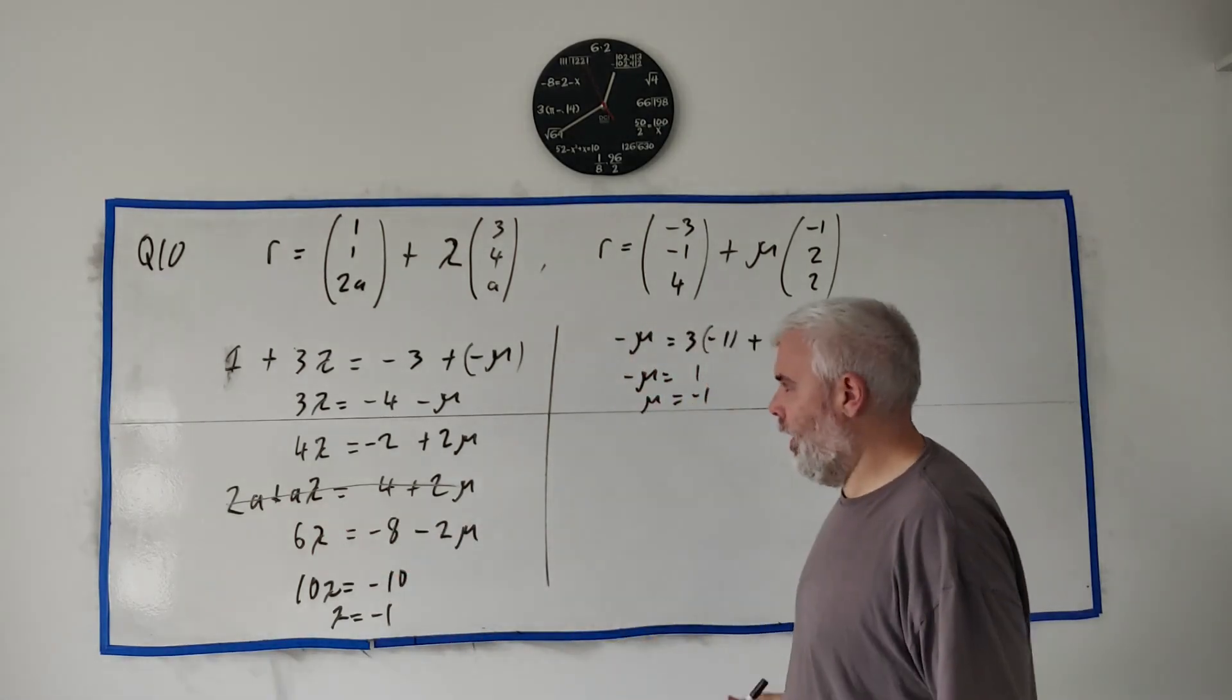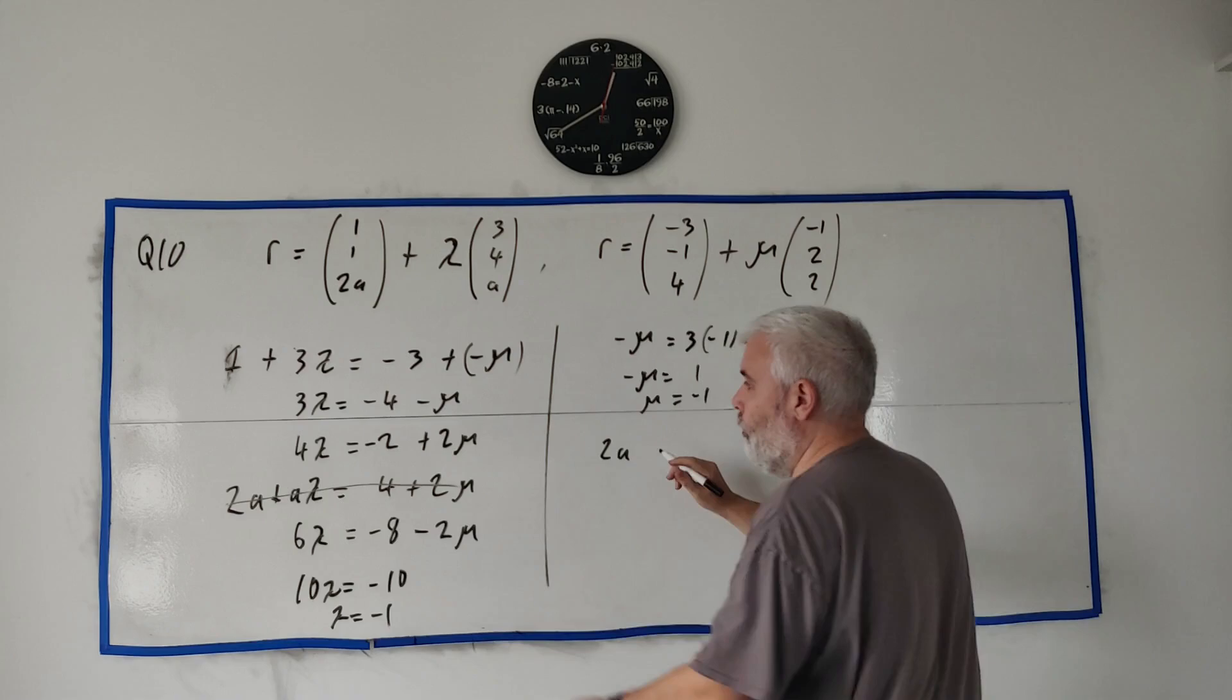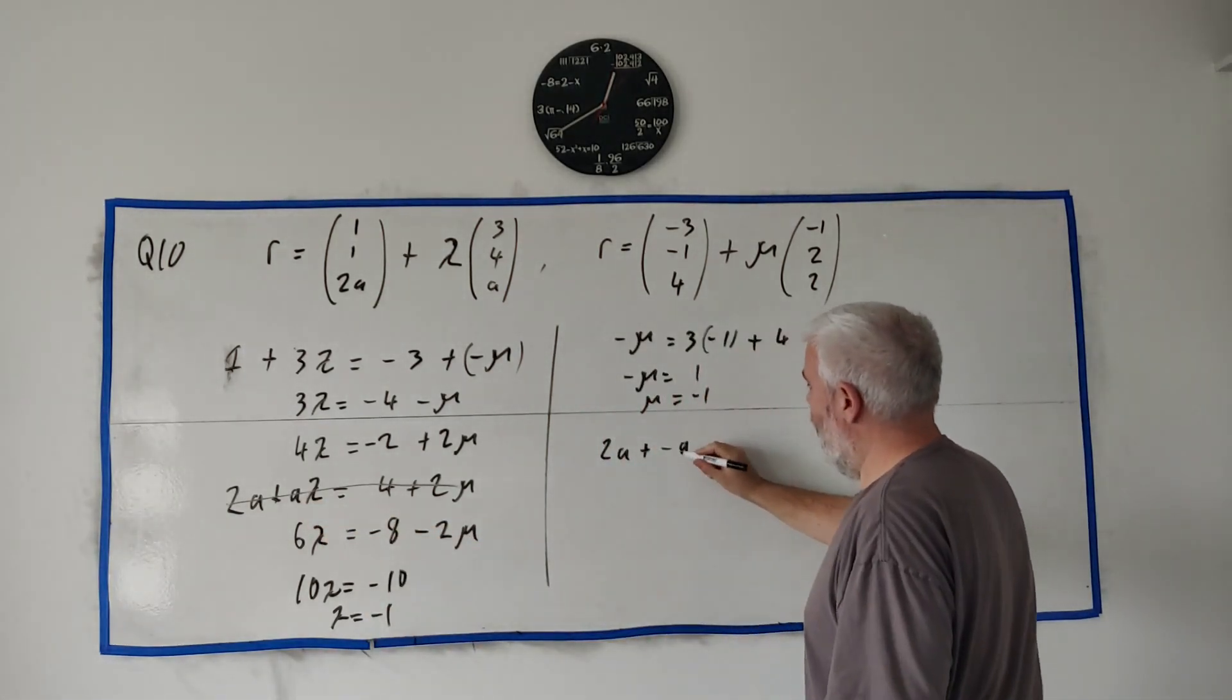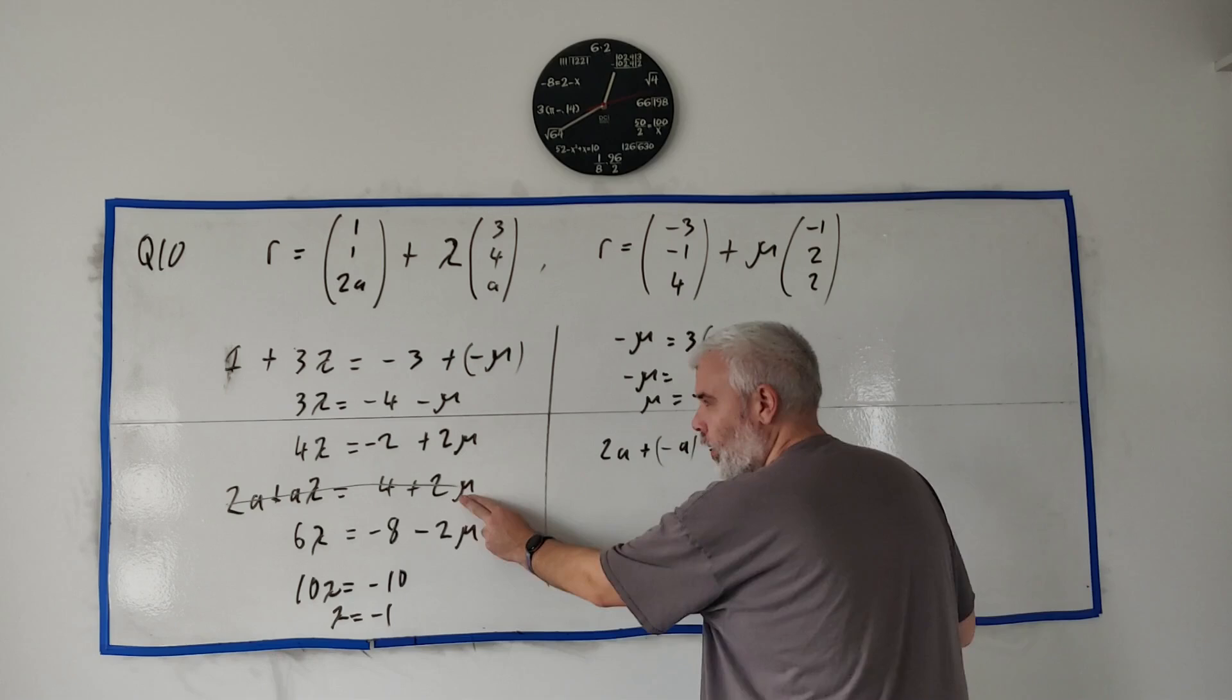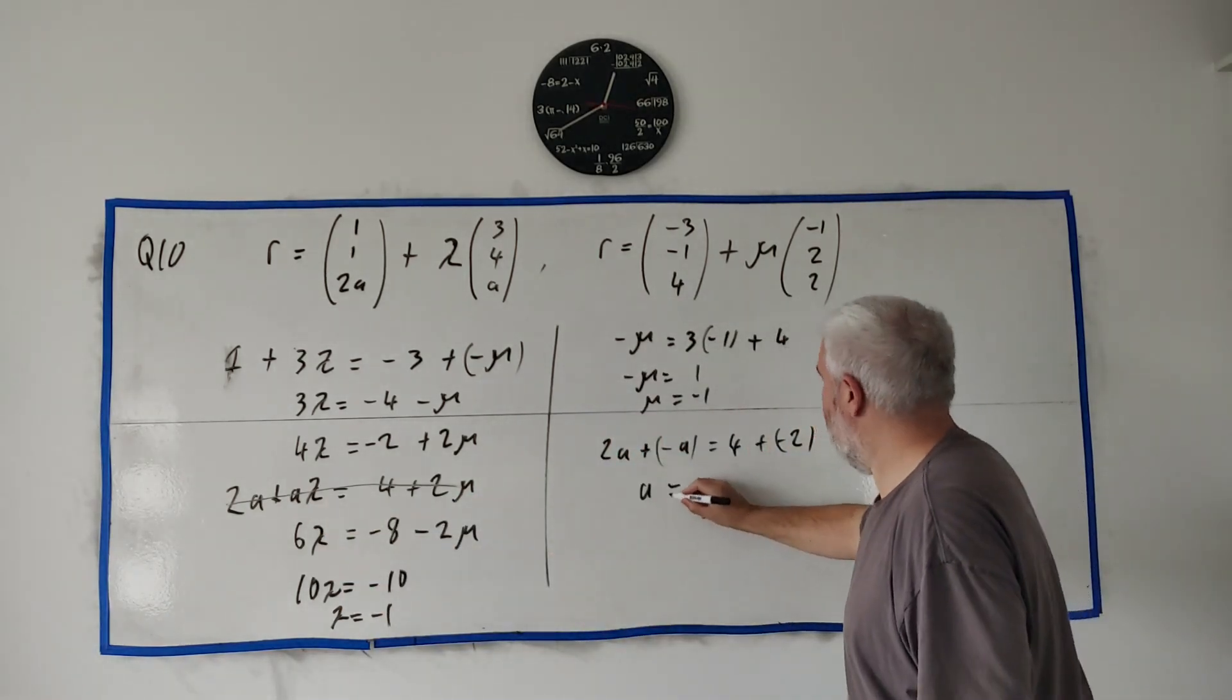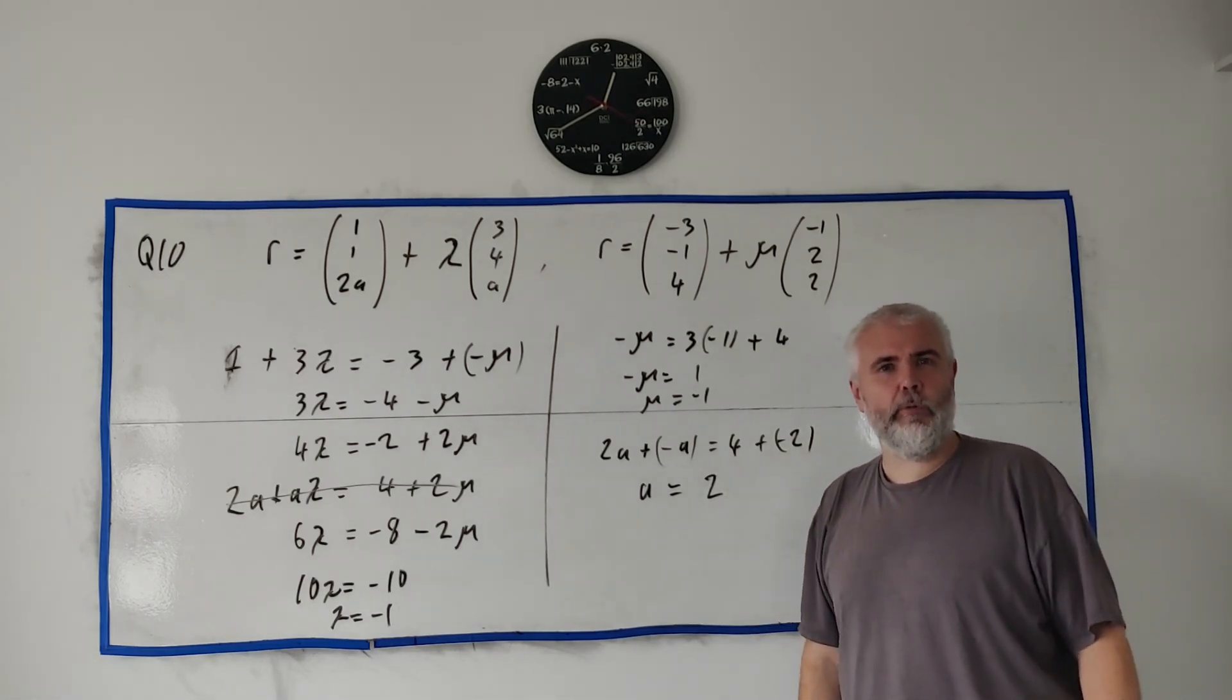Finally we just need to find the a. I guess this line here, 2a + (-1)a, so a = 4 + 2×(-1). That's just a = 2, and I think that's all they wanted.